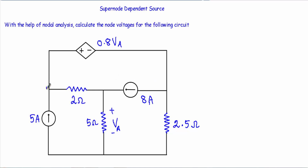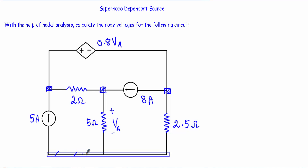In our first step we have to identify the total number of nodes in this circuit. This will be node number 1, this will be node number 2, this will be node number 3, and this will be our 4th node. I will assume this 4th node as our ground node or reference node, therefore this node will have a voltage of 0 volts.